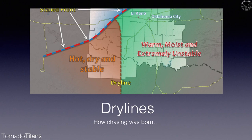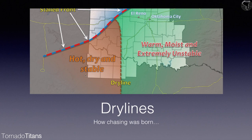This is a surface chart from May 31st, 2013 — the El Reno day — lifted straight from the National Weather Service Norman event page. It does a great job of explaining the dry line: basically hot, dry, and stable air to the west; warm, moist, and extremely unstable air to the east. Where those two meet, that's the surface convergence — that's where you get storms. This is how chasing was born. The dry line is great for a variety of reasons as a chase target. You can oftentimes get isolated storm modes off of the dry line, which when it comes to photography and visibility are just hard to beat.